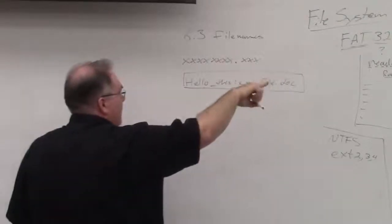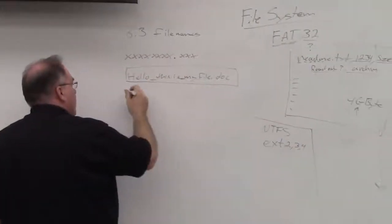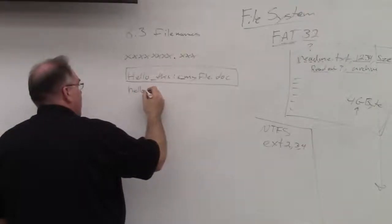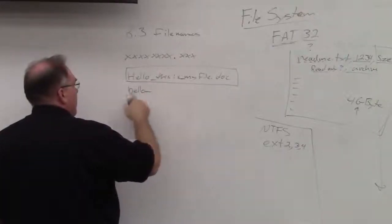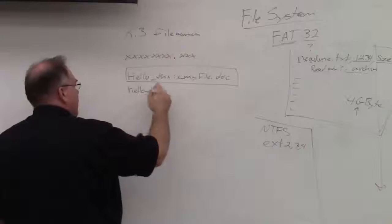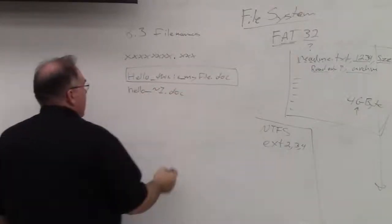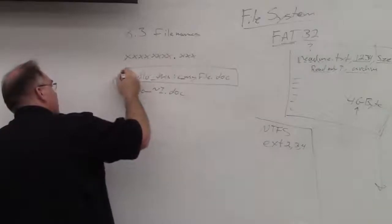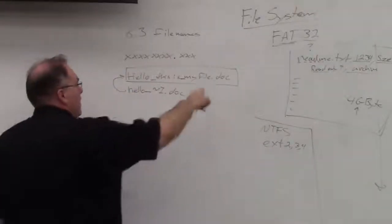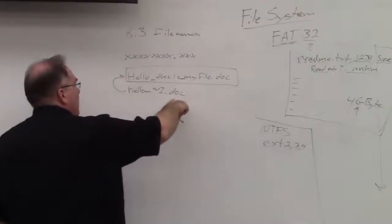What happens is the way this got implemented is Microsoft actually stores this information someplace else. And in the file table, what they'll store is something like hello underscore one, two, three, four, five, six, tilde one, dot doc. And then somewhere else they'll store this, and the file allocation table will know this name and it knows this name.